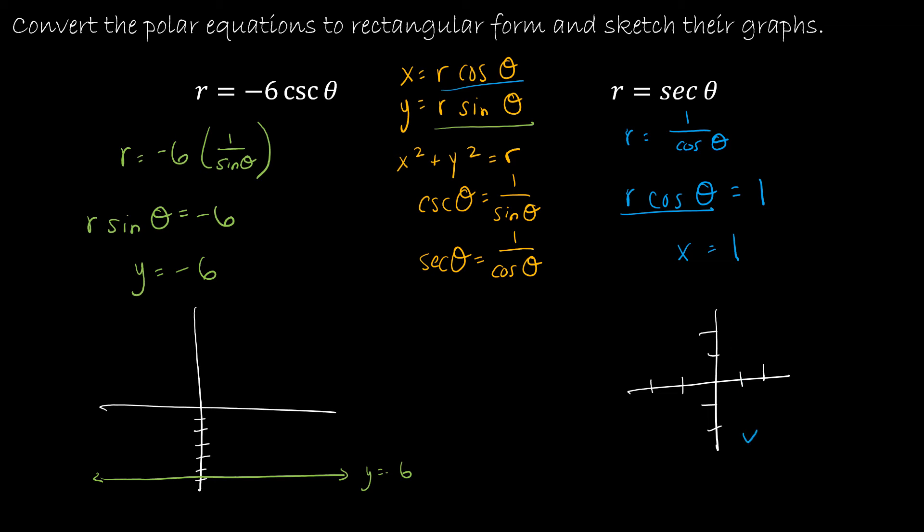So if I were going to graph this one, of course, my graph would be that x is equal to 1. Man, I can't draw a straight line to save my life. So there's my equation. So those are the trickier examples that actually turn out to be not so tricky.